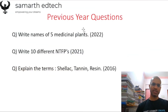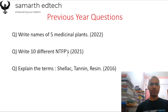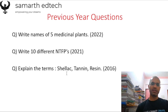Looking at previous year questions: in 2022 they asked about five medicinal plants, in 2021 they asked about NTFPs, and in 2016 they asked about shellac, tannin, and resin. These are easy questions once you memorize the names of NTFPs and medicinal plants. Your work is to remember at least five tree species from the Manikandan book for shellac, tannin, and resin. That's all for this session of Indian Forestry.